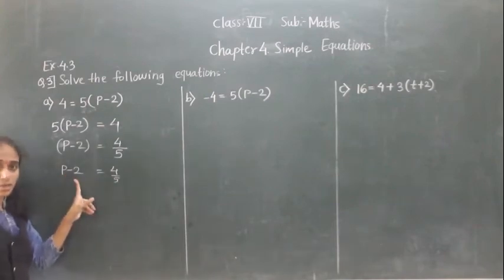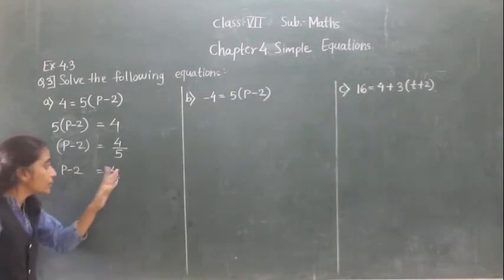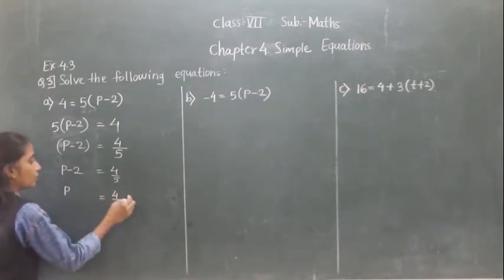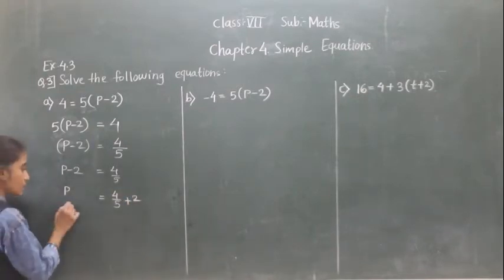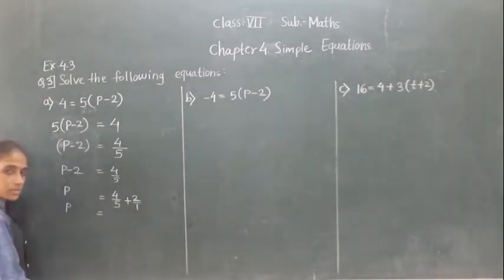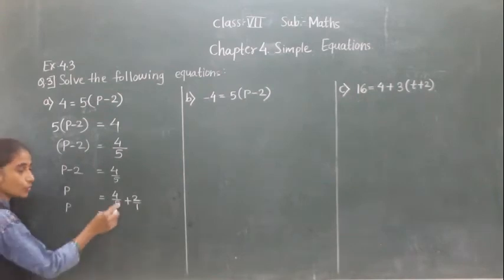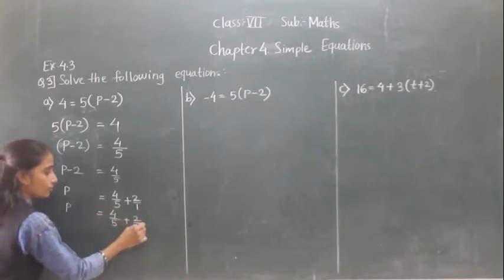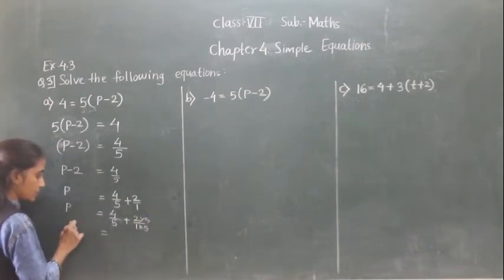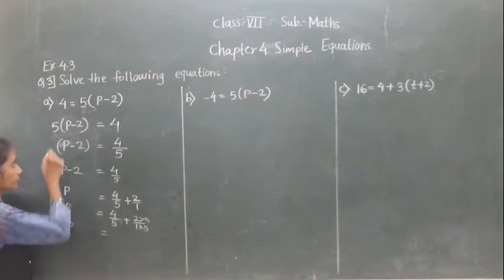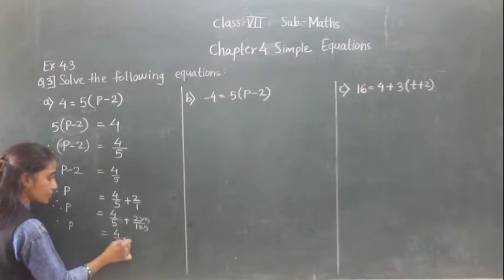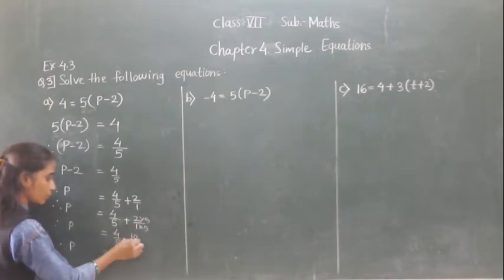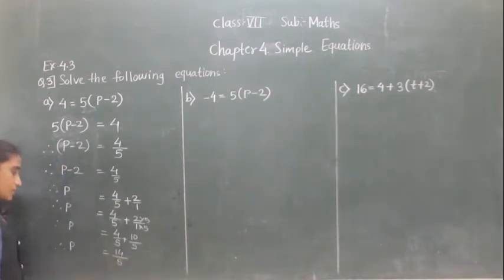Now 2 is here as minus. Transfer 2 to the right hand side — it will become plus. So P is equal to 4 upon 5 plus 2. Make the denominator equal to 5: 2 upon 1 becomes 10 upon 5. So P is equal to 4 plus 10 upon 5. Both methods give the same answer.